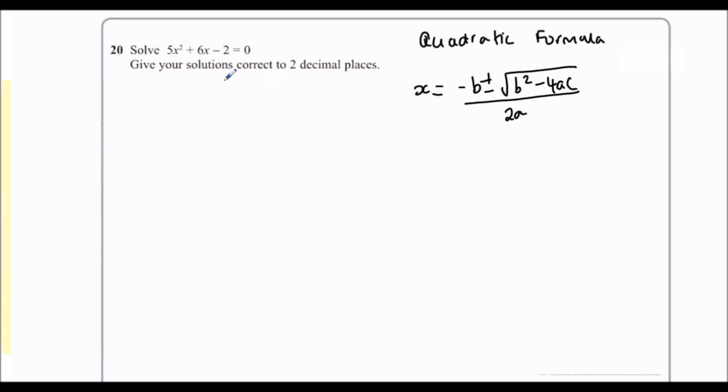So we need to know what a is, what b is, and what c is. So it's ax squared plus bx plus c. So a is the number before x squared, so a is 5. b, the number before x, that's 6. And c is the number on its own, which is minus 2.